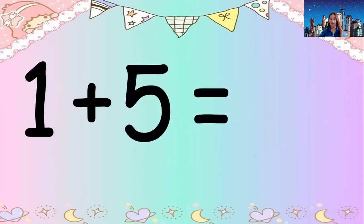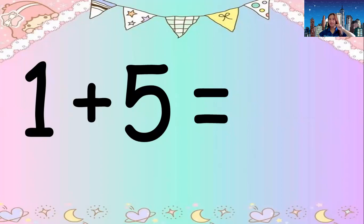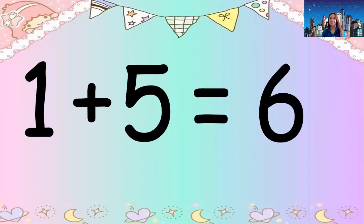Ready your fingers. What number is this? One. How about this one? Five. Let's add one finger plus five fingers — how many? Everybody count: one, two, three, four, five, six. The answer is six. Very good. Now read: one plus five equals six.